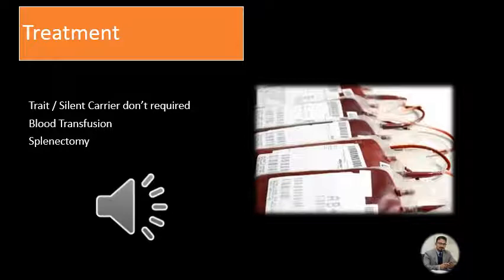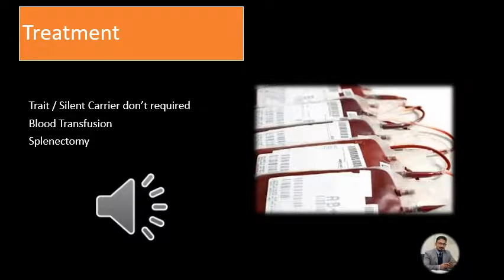Hydrops fetalis has no treatment; these babies die after birth as it is the most severe form of alpha thalassemia. To summarize: the first two types are not very dangerous, the third type requires transfusion or splenectomy, and the fourth type is not compatible with life. The next topic will be beta thalassemia major, which is most common in Pakistan — in NWF, Karachi, Balochistan, and Punjab. Thank you for watching.